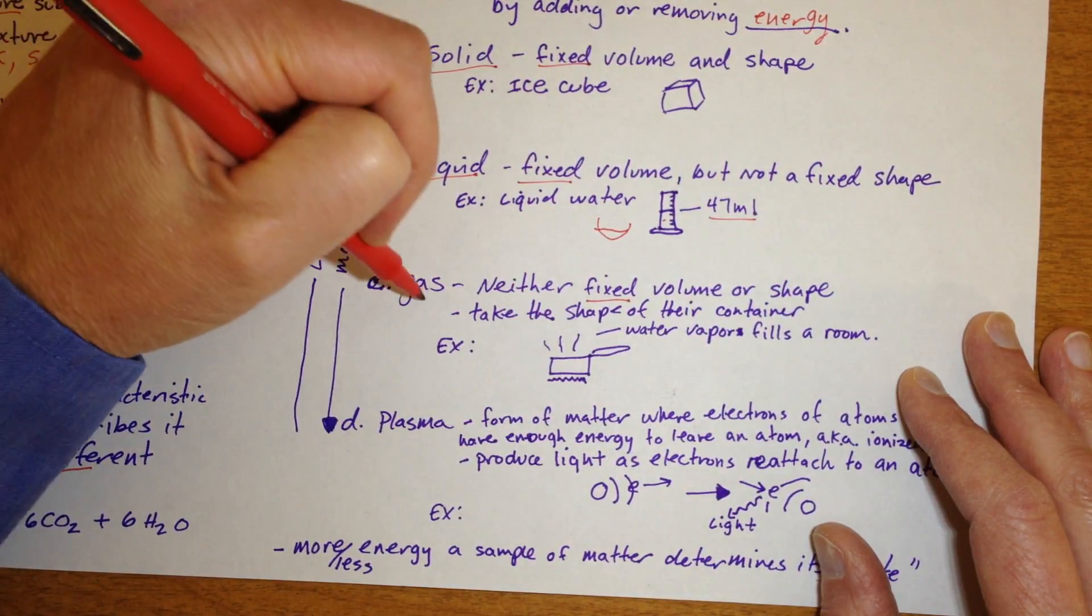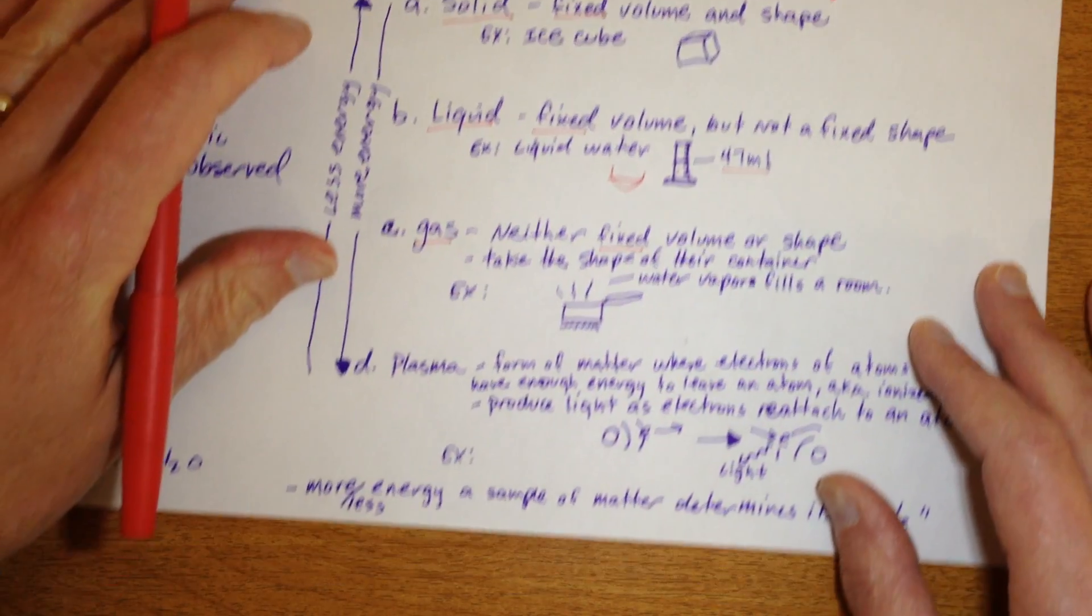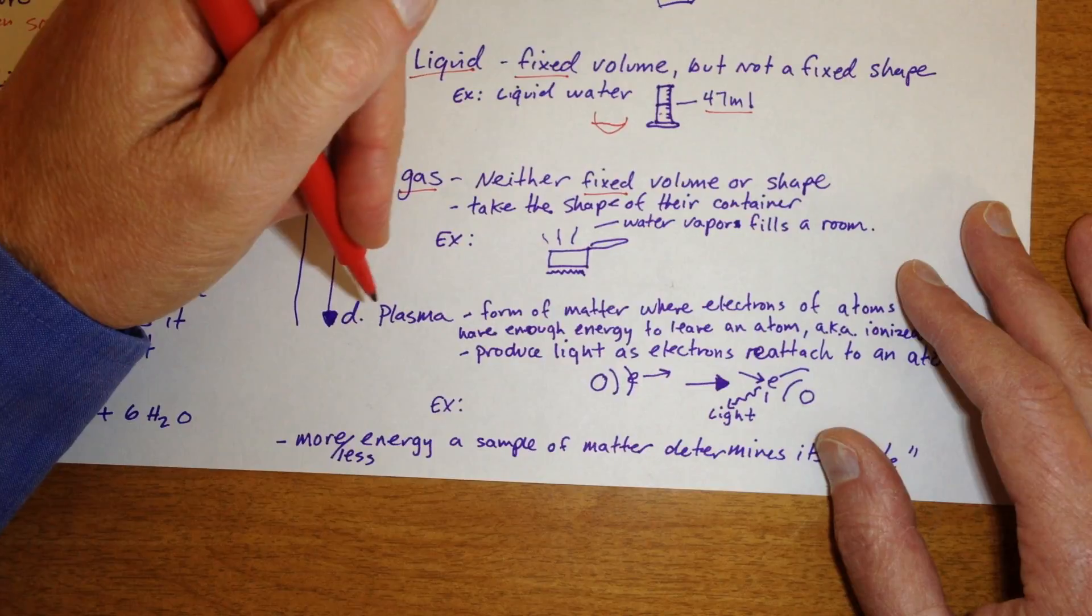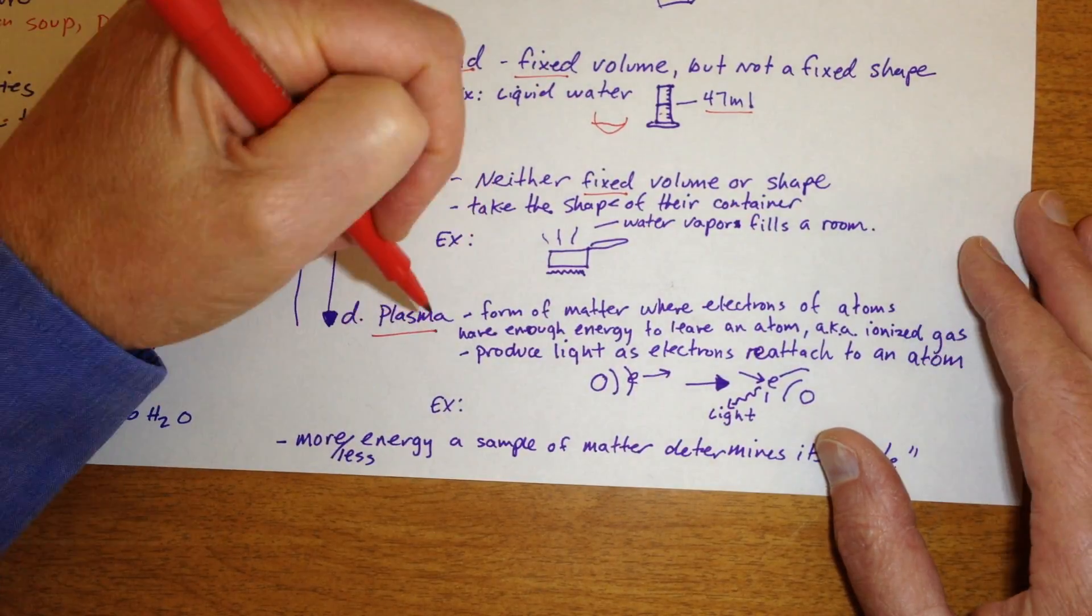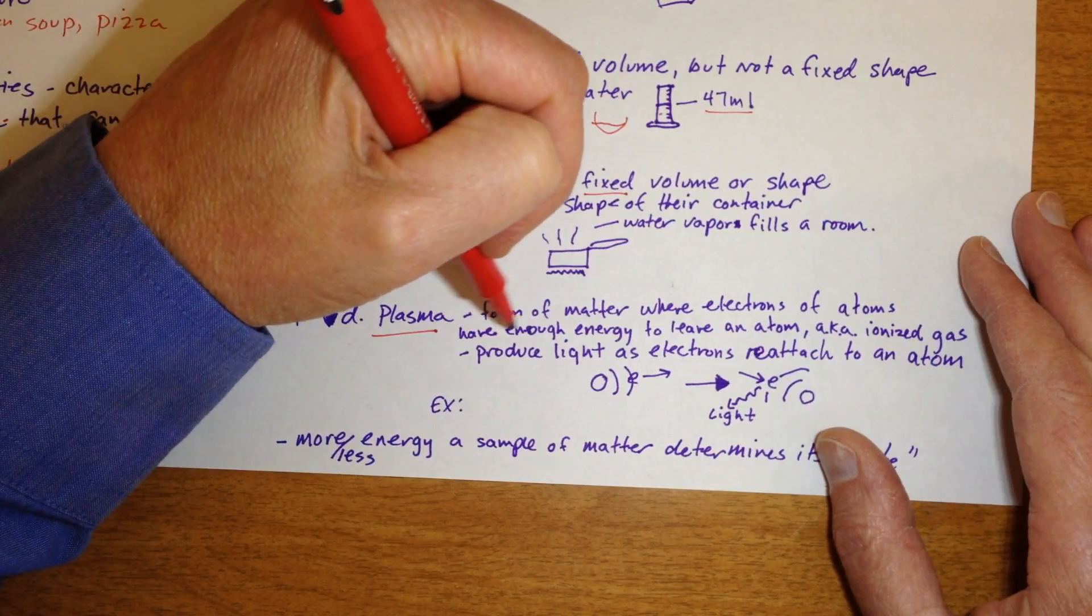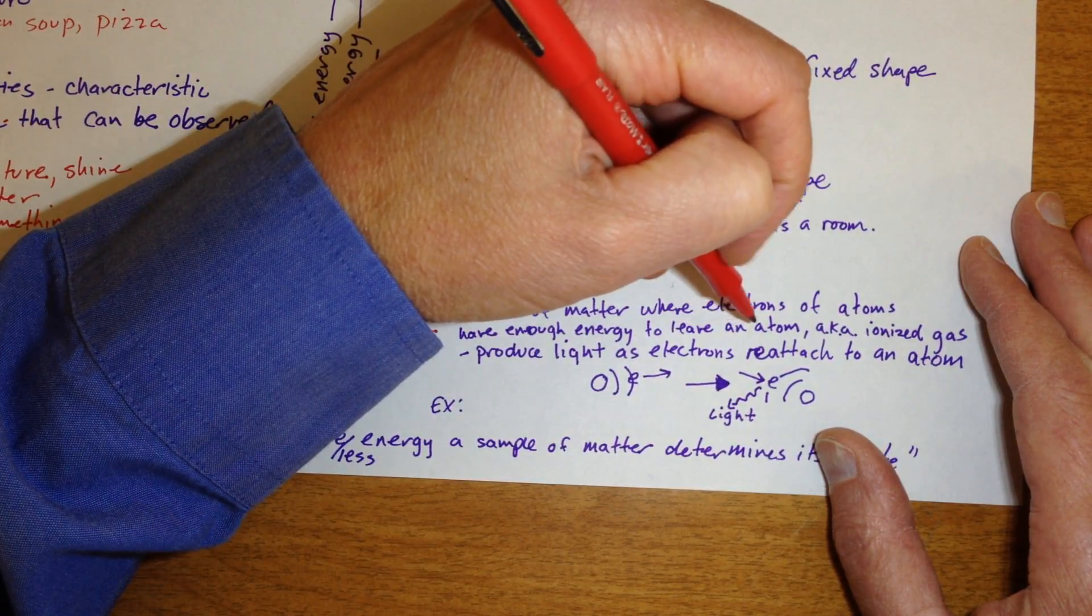So those are the three main ones here on Earth. But actually, the most common state of matter in the universe, because it's what stars are made out of, is called plasma. Here it's defined as a form of matter where electrons of atoms have enough energy to actually leave an atom.